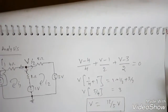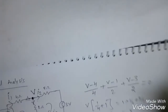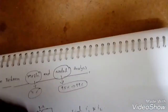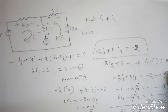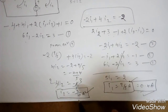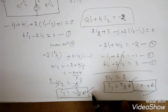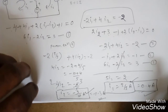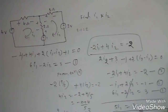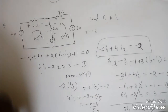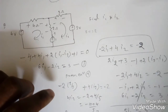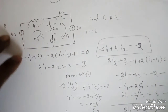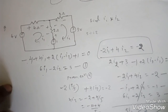Both methods give the same results: i1 = 0.4 ampere and i2 = −0.3 ampere. Nodal analysis provided the answers much more quickly with just one equation. This confirms that 95 percent of numerical problems can be effectively solved using nodal analysis, making it the preferred method in most cases.